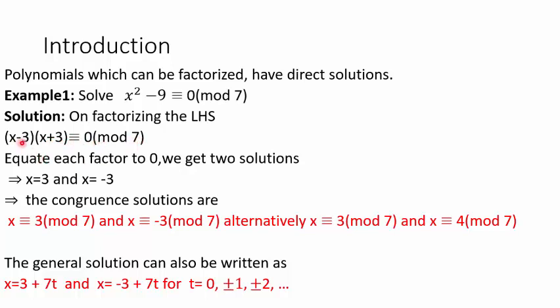If we equate each factor to 0 we get x = 3 and x = -3. So the congruent solutions are x ≡ 3 (mod 7) and x ≡ -3 (mod 7). We can replace -3 by its residue mod 7, which is 4, giving x ≡ 3 (mod 7) and x ≡ 4 (mod 7). The general solution is x = 3 + 7t and x = -3 + 7t, where t = 0, ±1, ±2, etc.